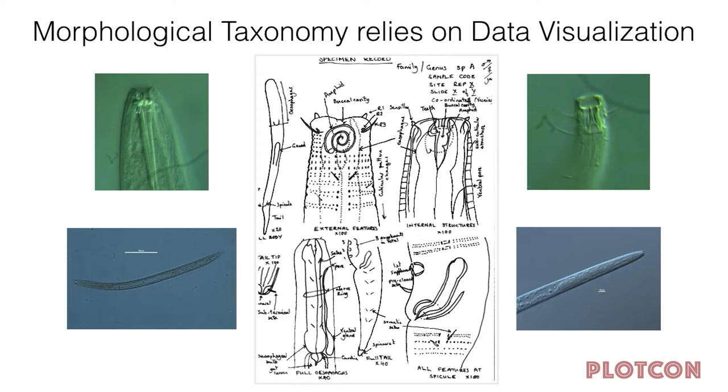I want to step back a second and remind everyone that taxonomy — it sounds like this historic thing we used to do — but it's actually a form of data visualization. When we're sitting under the microscope, we're looking at a specimen mounted on a slide, using our eyes and our brains and our knowledge of that environment and those species to basically create hypotheses about our data sets. Taxonomy is subjective — experts have different opinions, experts have better or worse skills for seeing different things — and we're fundamentally visualizing our data, comparing different anatomical structures to make assumptions and figure out the biodiversity and evolutionary relationships of these organisms.